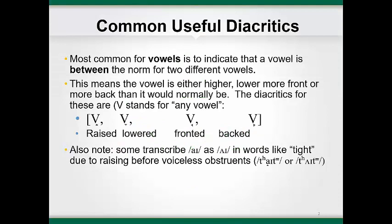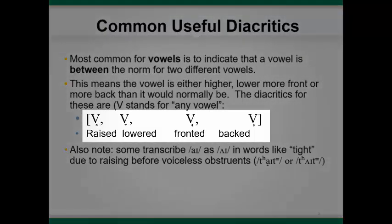It is common in the pronunciation of different regional dialects and in the speech of non-native English speakers for a vowel to be produced that is somewhat different than the production of standard speakers of the language. Often, it may sound as if the vowel is between two vowels. Even within the standard dialect, many vowels have different allophones depending on context.